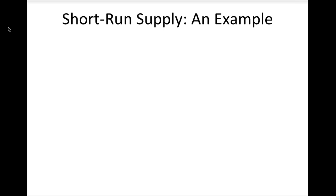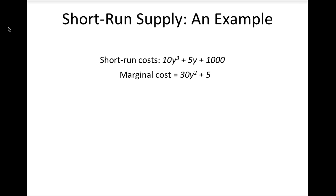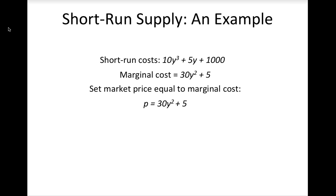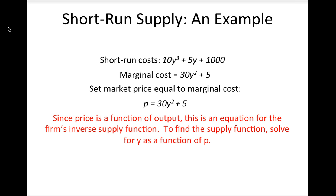Let's consider an example of how to find and graph a firm's supply curve from a specific cost function. Suppose that a firm's short-run costs are 10y³ + 5y + 1000. To find the formula for the supply function, first find the firm's marginal costs, which are equal to 30y² + 5. Then set the market price equal to marginal cost. This is the equation for the firm's inverse supply function since it describes price as a function of output. To find the supply function, solve for output as a function of price. We find that the supply function is y equals the square root of (P − 5) / 30.